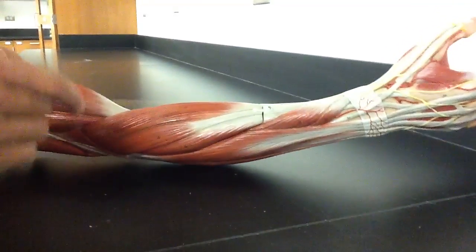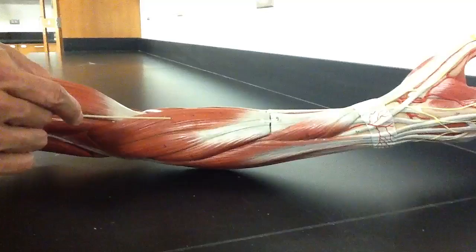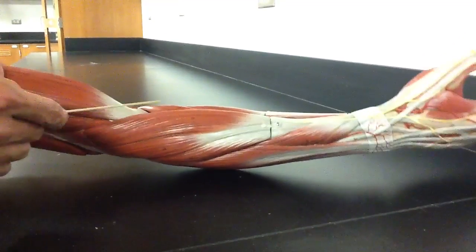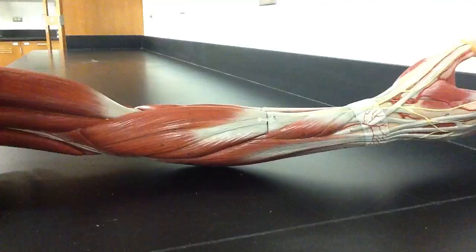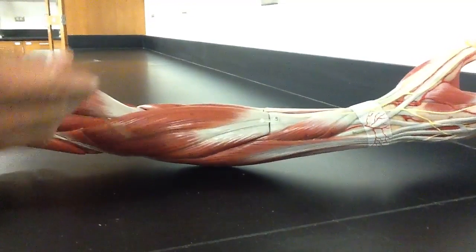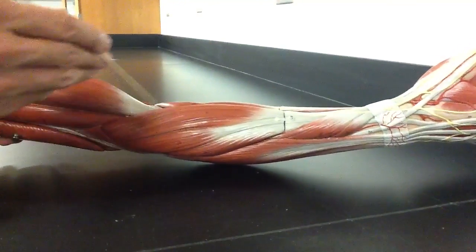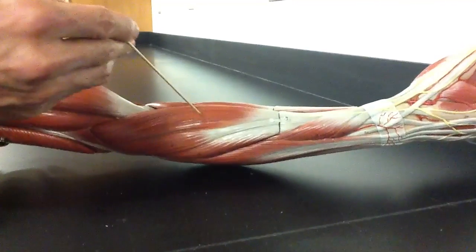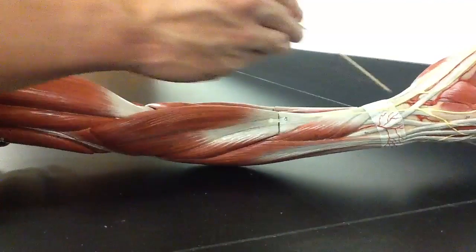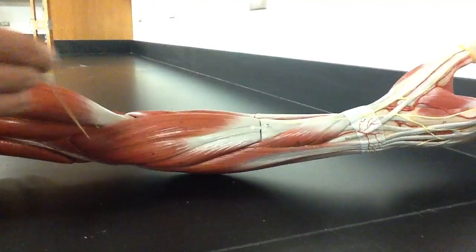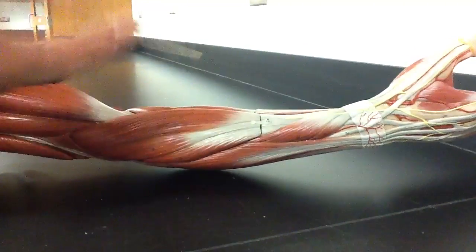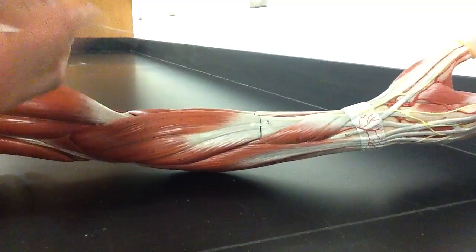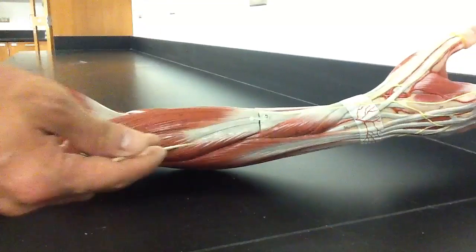Last superficial layer here would then be the brachioradialis, which then is not necessarily an extensor. It's actually a flexor. You're like, what's it doing on the extensor side? Well, it's mainly because of innervation. It's all innervated by the same nerve as the posterior compartment of the forearm. But it's actually a flexor of the forearm. It actually attaches to the styloid process and it flexes the elbow and then supinates if you're off neutral or pronates if you're off neutral as well. So that's the superficial layer.